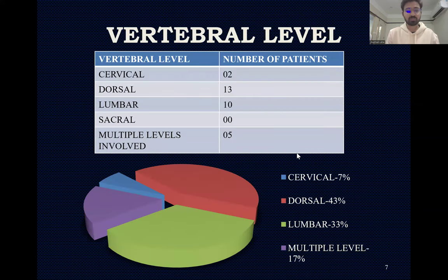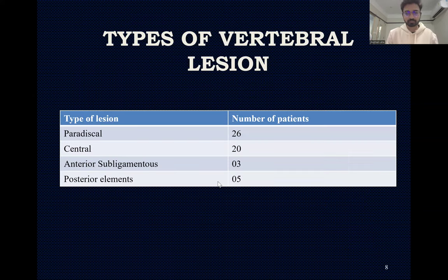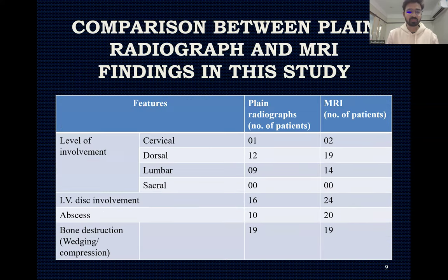Regarding vertebral levels, the most common vertebral level involved is the dorsal vertebra, followed by the lumbar vertebra. The rarer vertebrae involved are the cervical vertebrae and multiple levels. Regarding types of vertebral lesions, the most common type is paradiscal, the second most common is central, followed by posterior elements and anterior subligamentous.